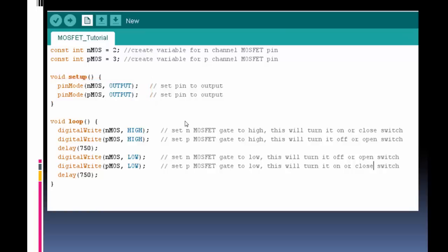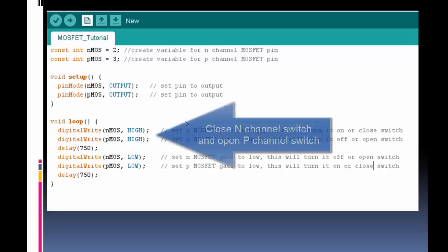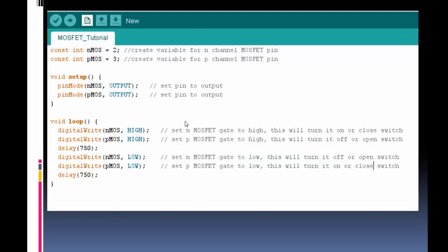In my loop, I'm just going to go back and forth. Notice that I use the same value. I do a digital write to my NMOS and my PMOS, and I do it for both high. But this is going to have different effects because we know that they're different. This high is going to turn my N-channel MOSFET on or close the switch, and it's going to turn my P-channel off or open the switch.